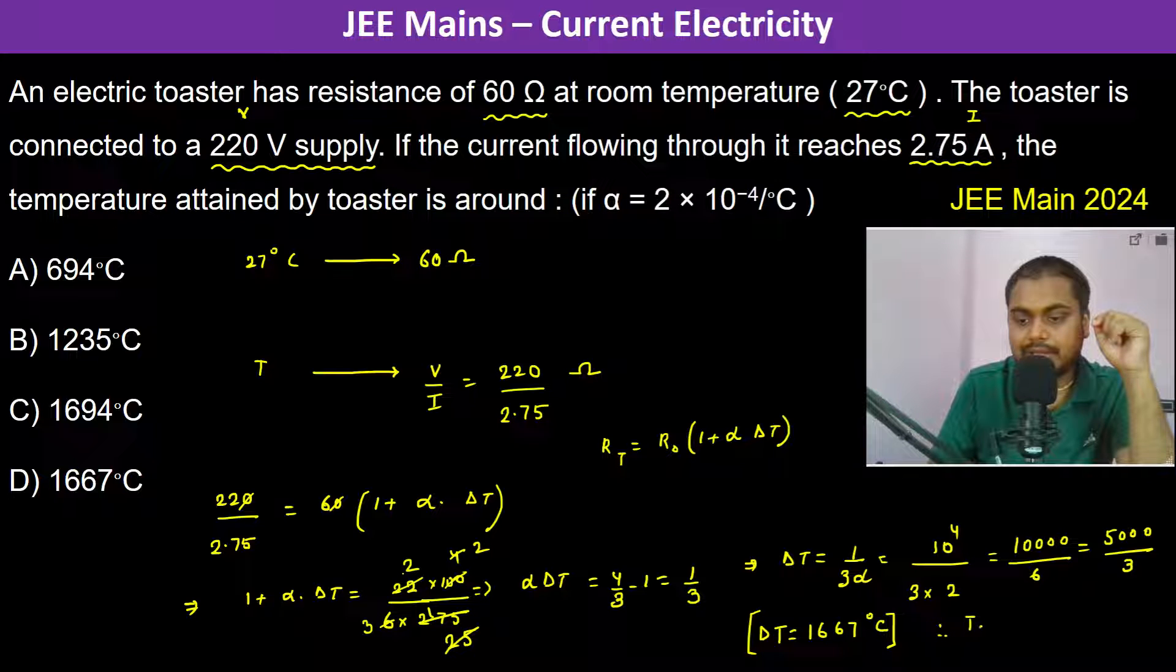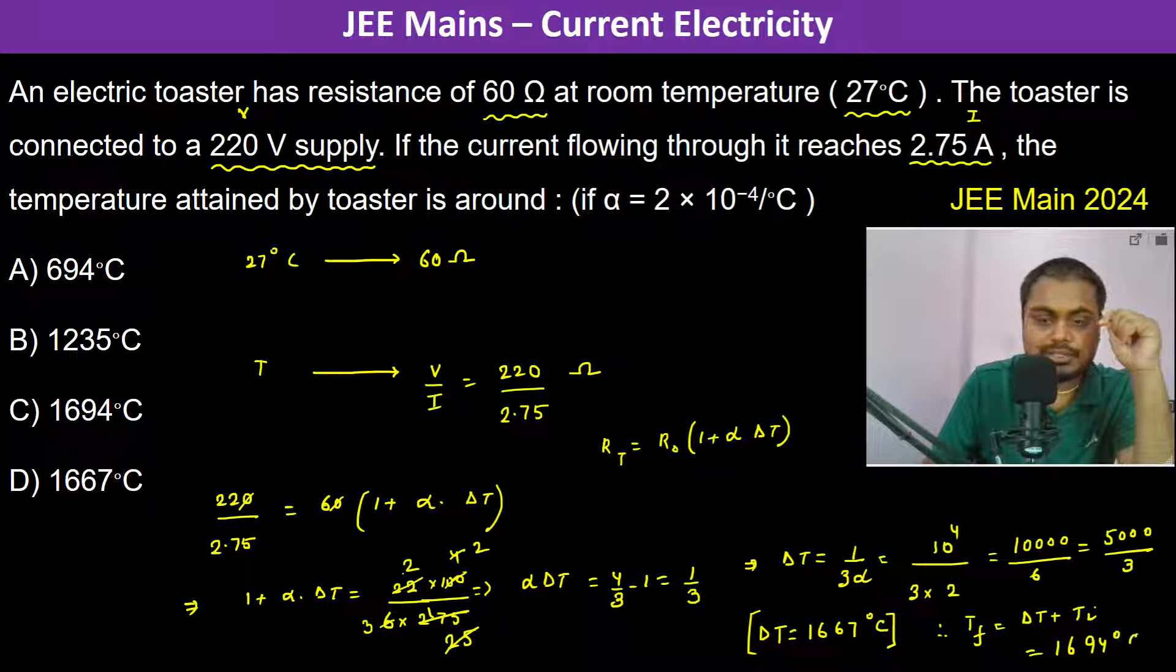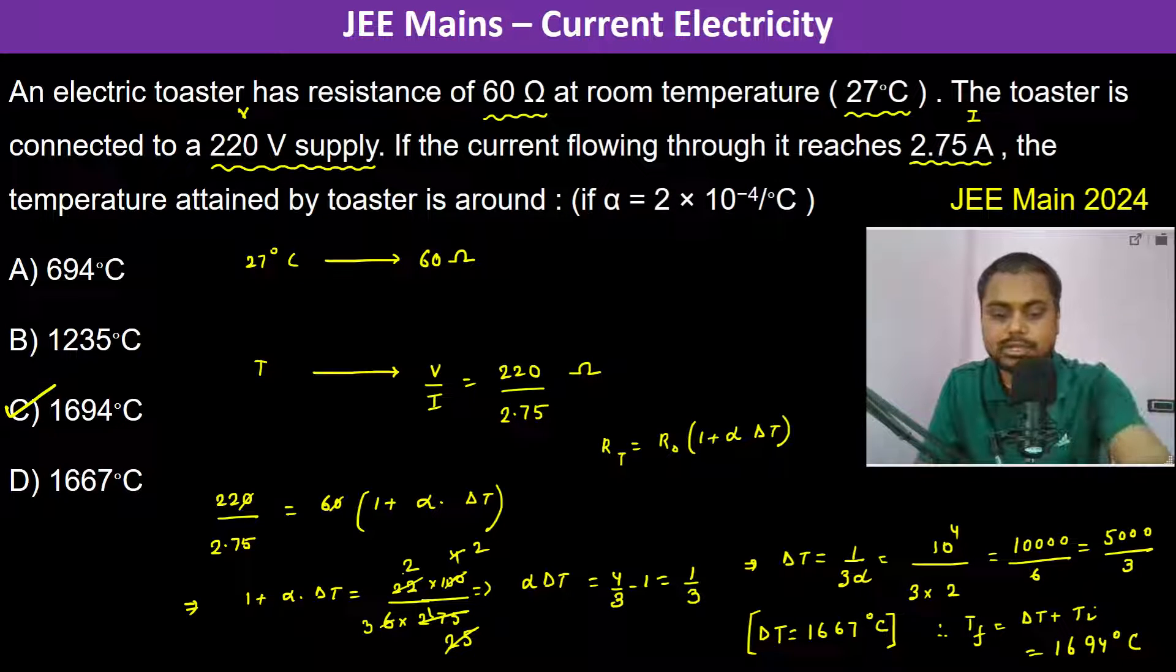The final temperature is going to be Delta T plus T initial, which is 1,667 plus 27, so that is 1,694 degrees Celsius. Therefore this answer is going to be C. Thank you.